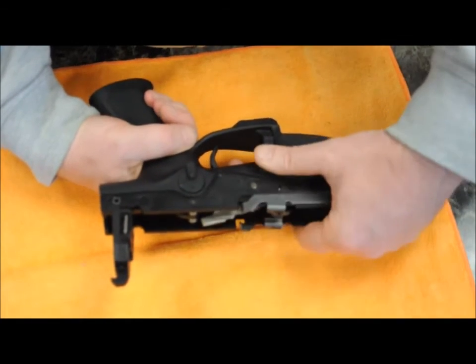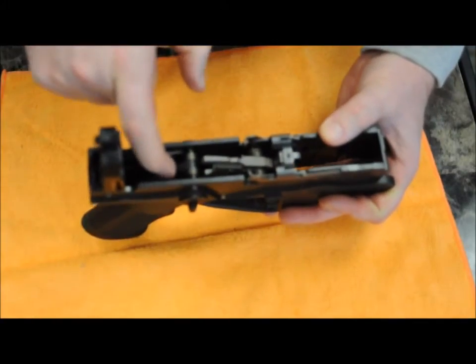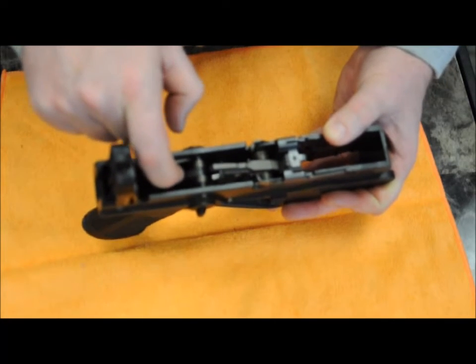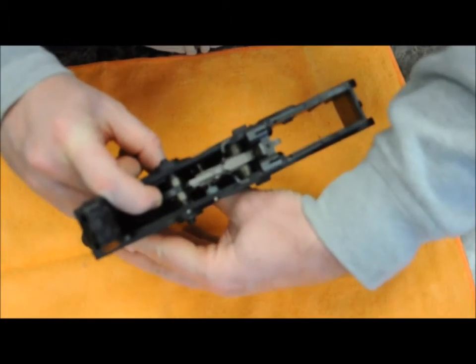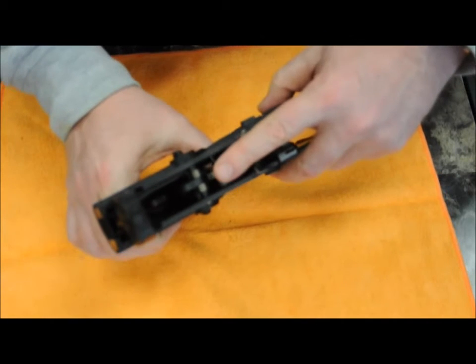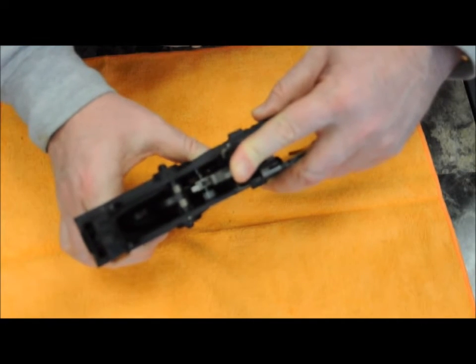Next thing to check, with the hammer cocked, does the drop safety work correctly? So what we're going to do, first the drop safety should be pivoting freely and you should feel spring pressure pushing it back out. When you push it in and you pull the trigger, the gun should not fire. When you release it, the gun should not fire. And now that it has been released, if you pull the trigger, it should fire normally. With all those checks in place, the lower is ready to put back in the rifle and proceed to live firing.